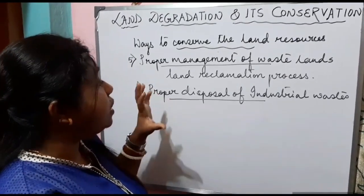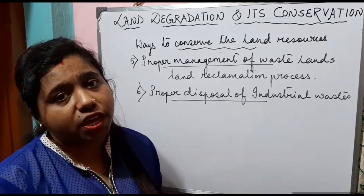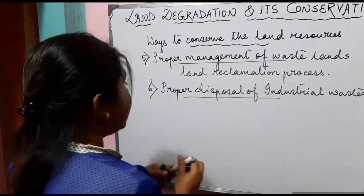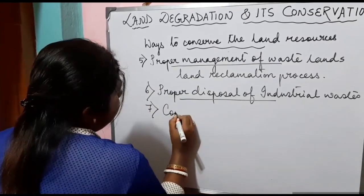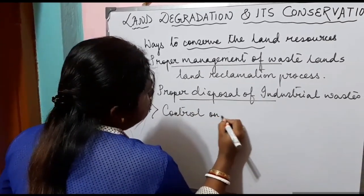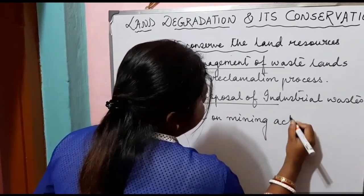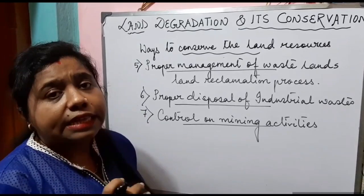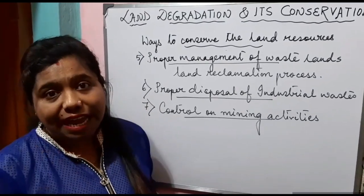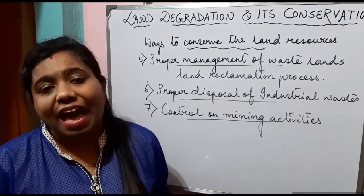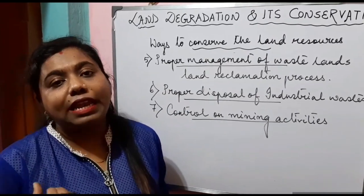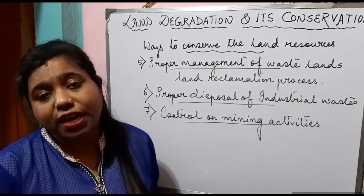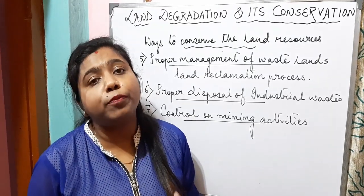The sixth conservation measure is proper disposal of industrial waste. We should treat industrial effluents properly before discharging them into water bodies or onto land, so that they do not degrade the quality of water or land. The seventh and last way to conserve land resources is control on mining activities. Strict rules and regulations need to be followed, and areas where mining has been done need to be properly reclaimed and closed so that there are no deep scars or traces of overburden on the land surface. Using proper technology with strict rules and regulations, we can control mining activity.